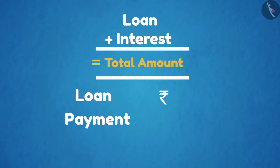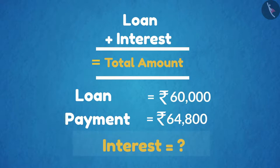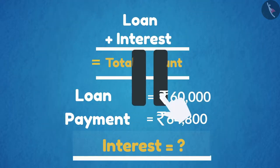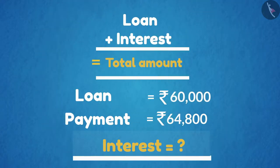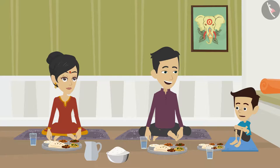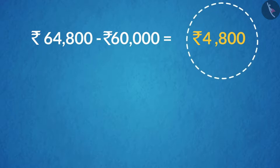Look, if I take 60,000 rupees to start my work and I have to pay 64,800 rupees after one year, then how much interest do I have to pay? You can pause the video if you want and think about it. If we subtract 60,000 from 64,800, we get 4,800. That means you have to pay 4,800 rupees as interest.